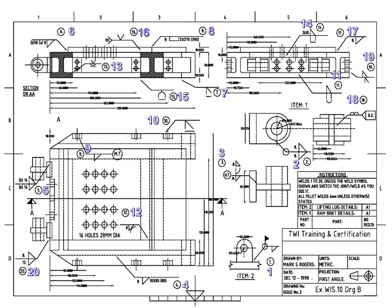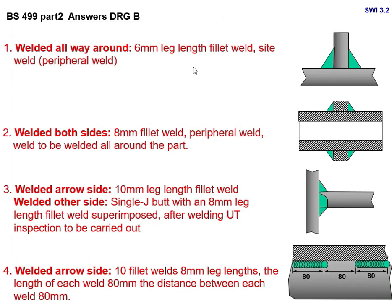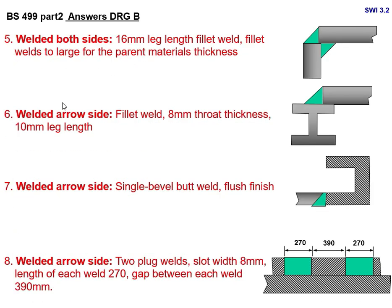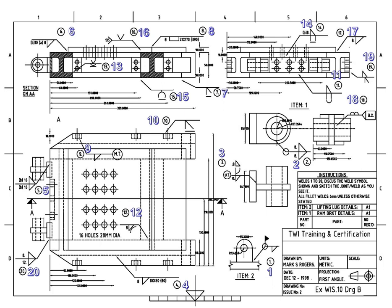Joint number 8 shows '2 × (270), in bracket 390.' This means: welded arrow side — 2 plug/slot welds; slot width is 8 mm; length of each weld is 270 mm; gap between each weld is 390 mm. You sketch the joint configuration to show 2 plug welds with those dimensions.